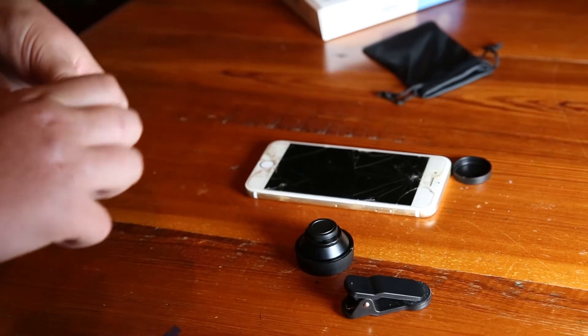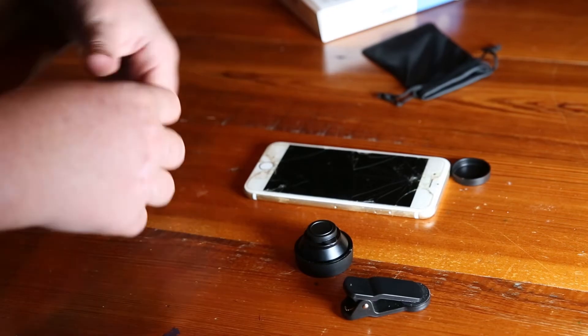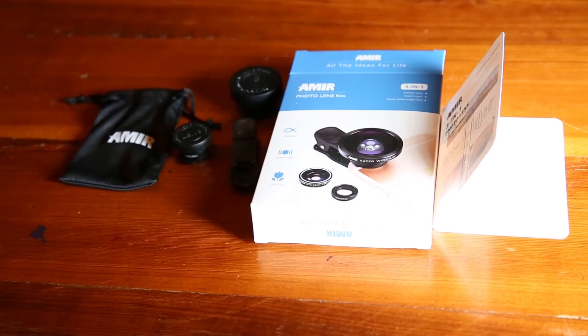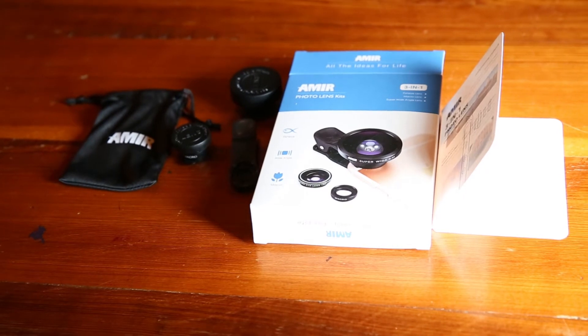And the fisheye is very cool because you can do cool little pictures. And the macro, as we were saying, if there's a leaf, you want to take a cool picture and get really close to it. So I would definitely buy this product. I really like it.